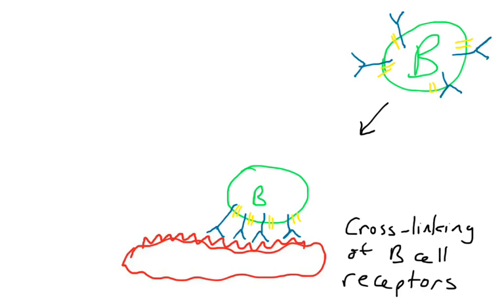So if the B cell receptors run into each other, they just don't really hang out with each other in the absence of antigen. But in the presence of antigen, you can see all the B cell receptors cluster together. We call that B cell receptor cross-linking. This is the first step that is required for B cell activation.